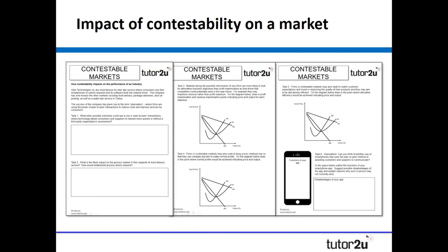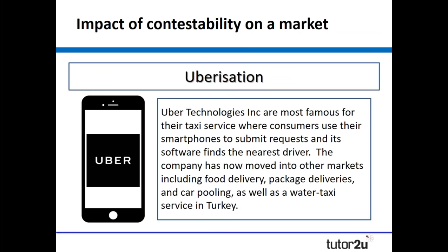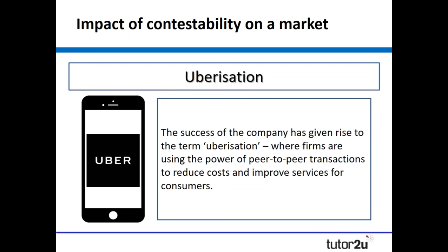The third resource looks at the impact of contestability on a market, using Uber as a case study. You'll know Uber primarily from its introduction into the taxi market, but it's also using its technology to move into food delivery, package deliveries, carpooling in America, and water taxi services in Turkey. This expansion has generated the new word 'Uberization' — the idea of a firm developing greater peer-to-peer transactions, allowing customers and suppliers to communicate more quickly and effectively, reducing costs and improving services.